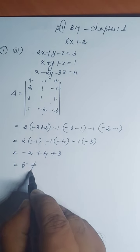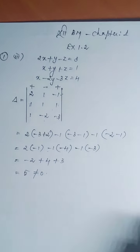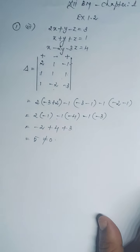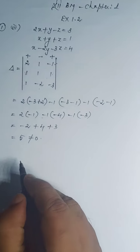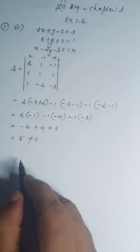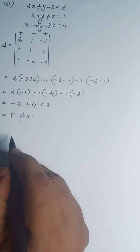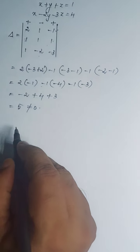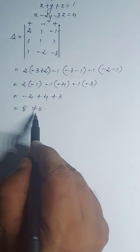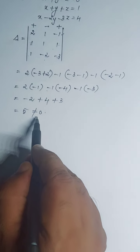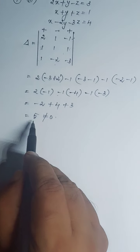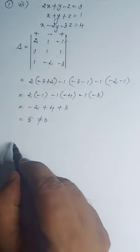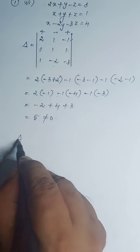Not equal to 0. Already I told you: solving the equations by determinant method or Cramer's method, the delta value must not be equal to 0. So we can proceed.